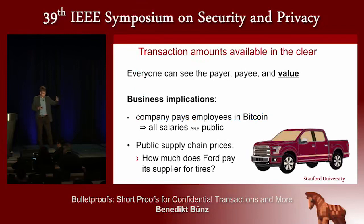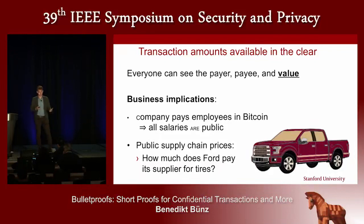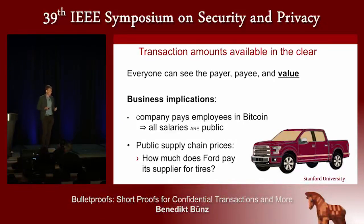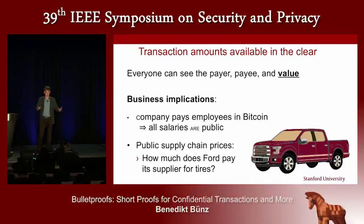The problem with a Bitcoin transaction is that the transaction amounts are available in the clear. There's also other information like the payer and the payee that are available. It means that if I receive my salary in Bitcoin, everybody can see what my salary is. Additionally, if I'm a business buying supplies, everybody will be able to see how much I'm paying. These are important business secrets that you would not want on a public ledger like a blockchain.